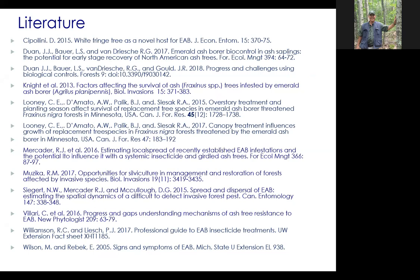First question from Jim: he wants to know whether EAB is expected to jump to other species of trees as the population of ash gets too small to sustain EAB. The general thinking right now is that it is still very much a host-specific species and would stay primarily on ash. But those things can change, and as I mentioned, it has been cited on at least one more species — the white fringe tree. It's within the realm of possibility that it could move to another species. Right now the major concern is still really just on the ash, and the place to look would probably be in urban areas like Michigan where EAB has been around for a while.